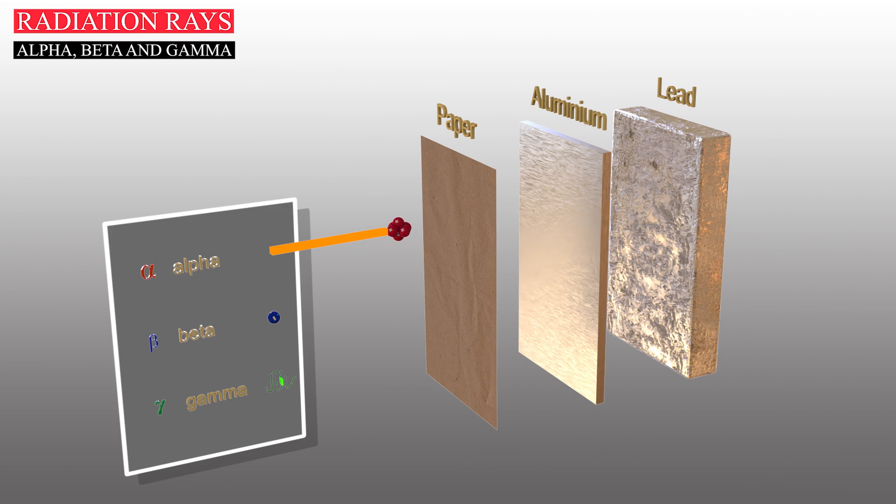A layer of paper stops an alpha particle. The beta particle easily passes through paper but is stopped by aluminum. A gamma ray is not stopped by the paper or aluminum but its progress can be stopped by lead.